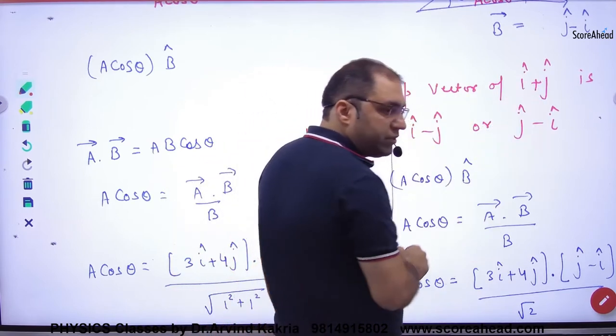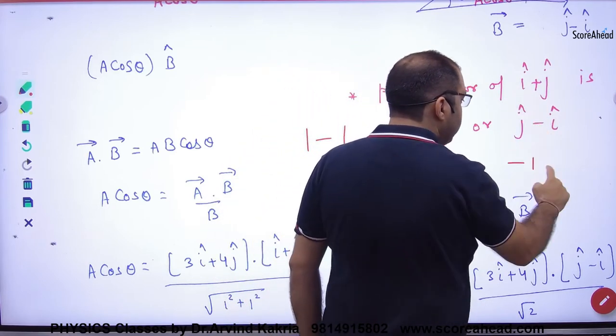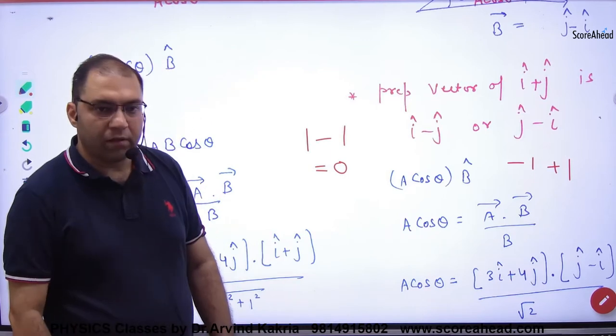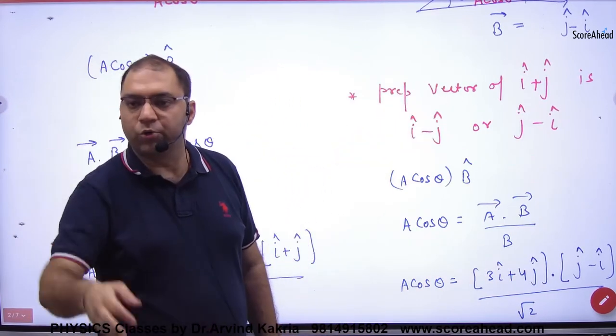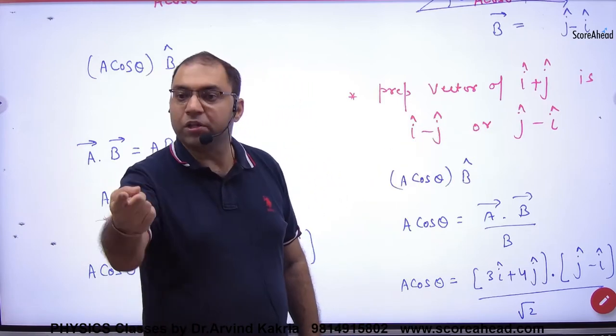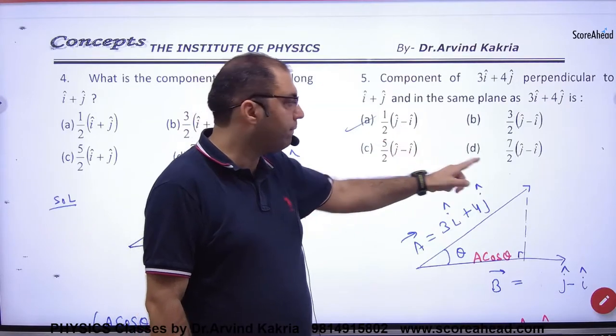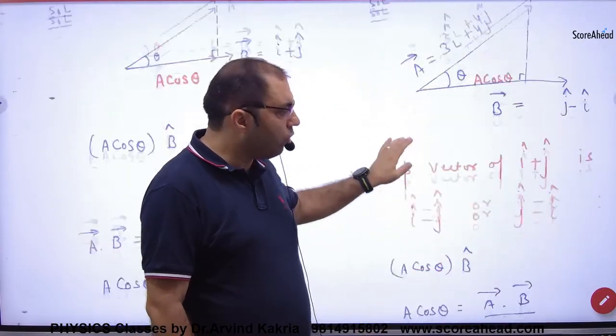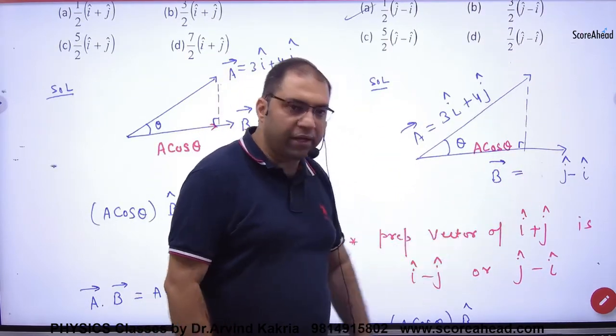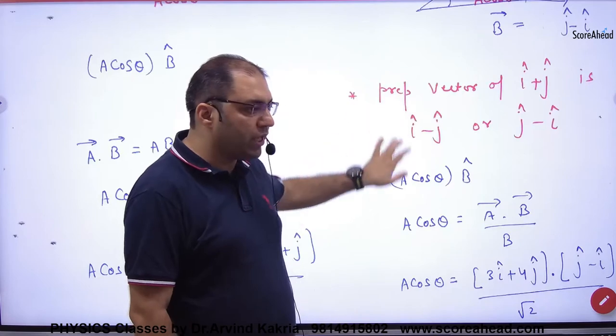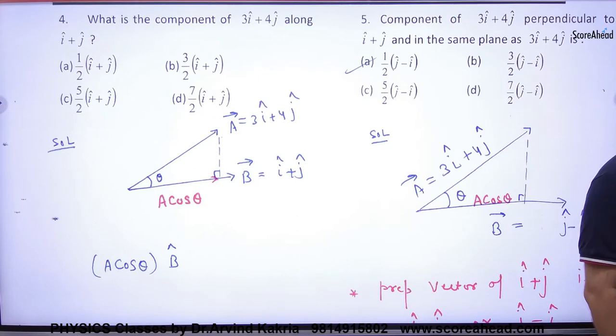Let's see. Second student said j cap minus i cap. i dot i is 1, j dot j is 1, then the answer is zero. That means if i cap plus j cap perpendicular, then there will be something in both sides. So what will I choose? For this, you will see options. What will it be? j minus i. You don't need to do this step. You will know that the second vector is j minus i. Clear here?